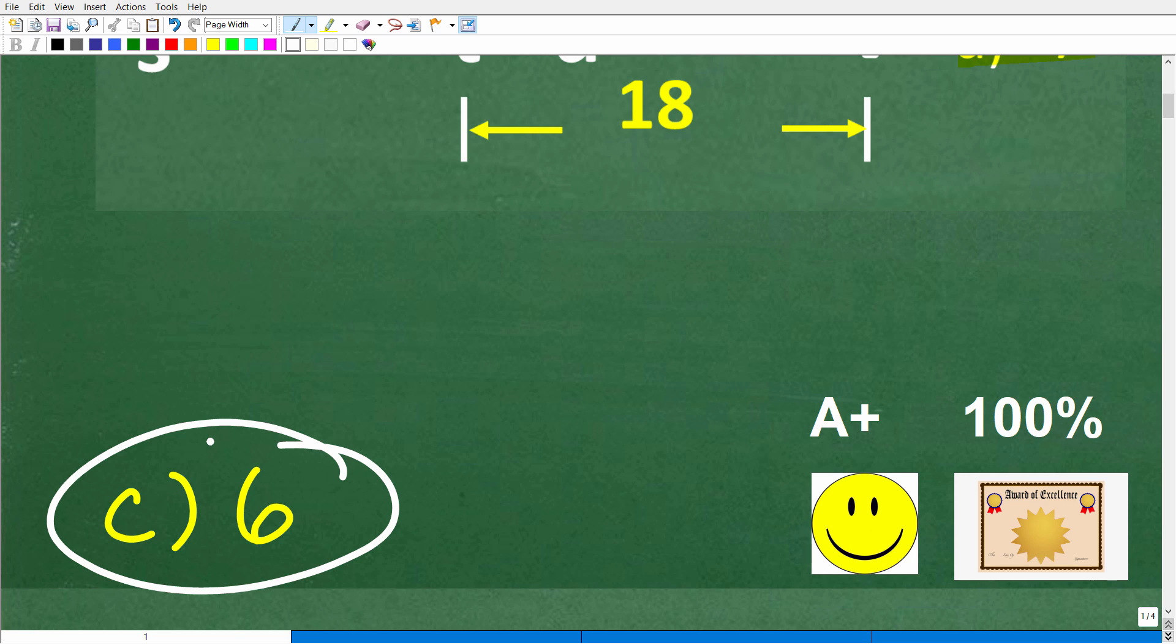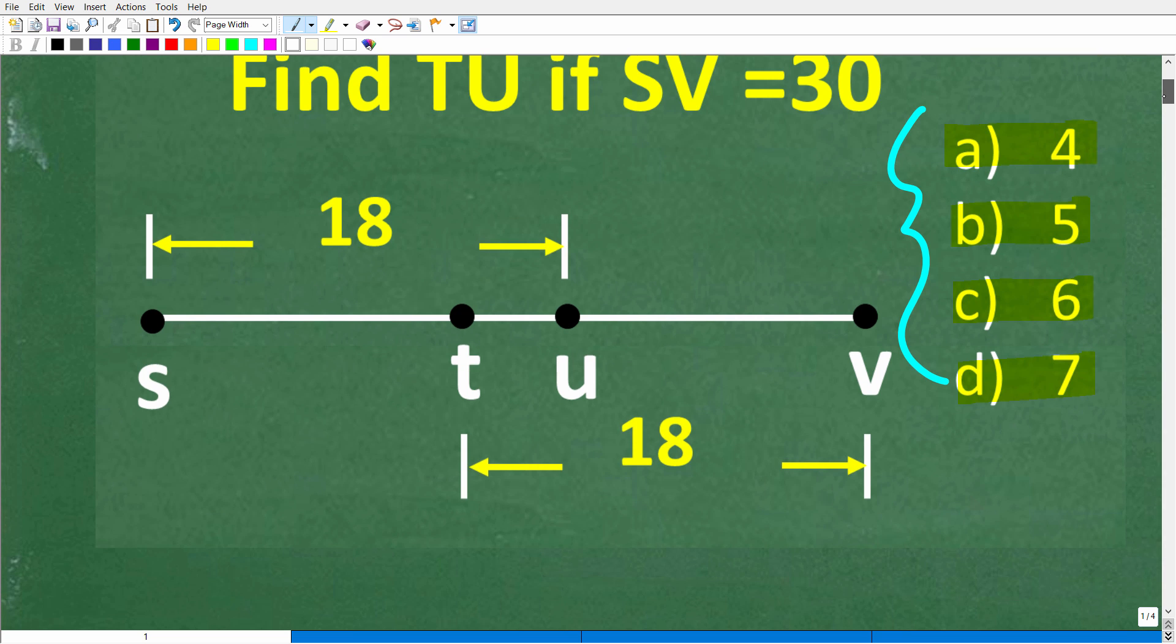Now if you got this right, you definitely get a happy face, an A plus, a 100%, and a Certificate of Excellence for being a certified professional expert in the area of calculating distance on a number line. And that is the big clue here, is you want to think about two things. The first is a number line.